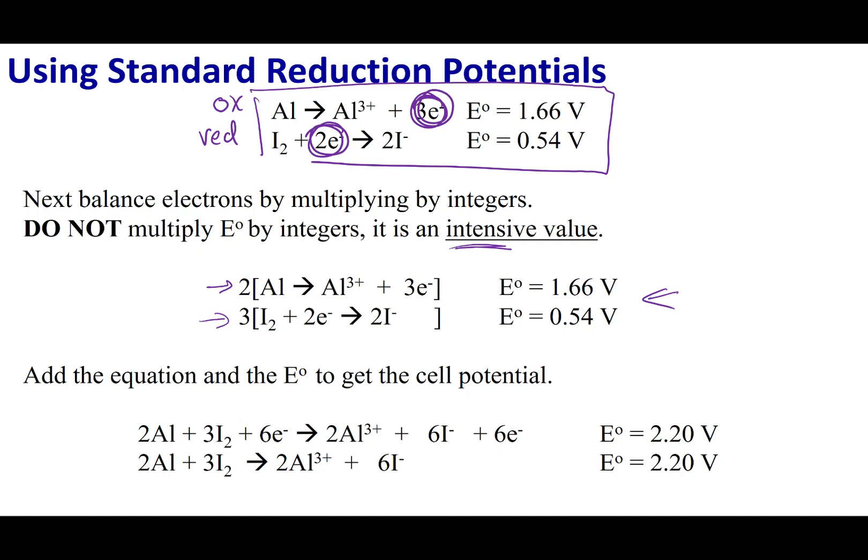So once I make sure my electrons are balanced out, I can add my reactions and then cancel out the electrons that appear on both sides. I'm going to simply add these half reaction potentials to get me my full cell potential. And so now what you can do is report to Elon Musk that this is the reaction you're going to conduct. You're going to take two aluminums, combine them with three iodines, making three aluminum ions and six iodine ions. This is going to give you a battery with a potential of 2.2 volts.